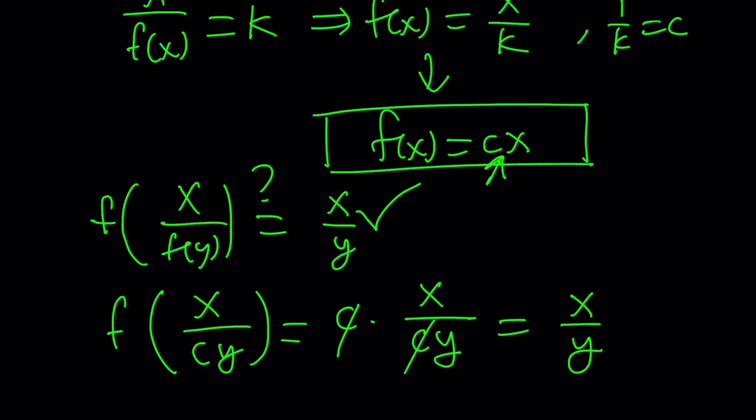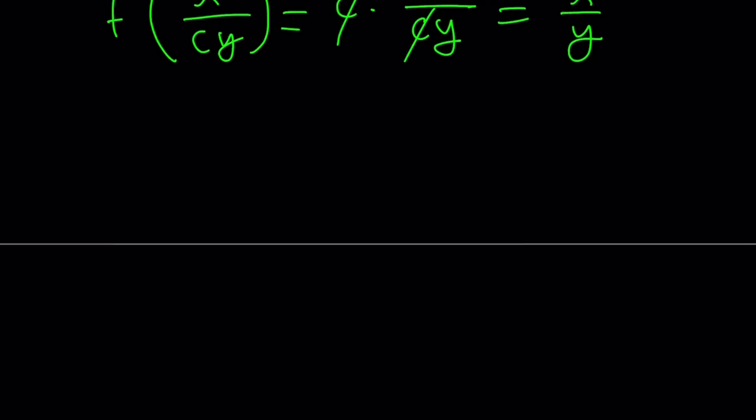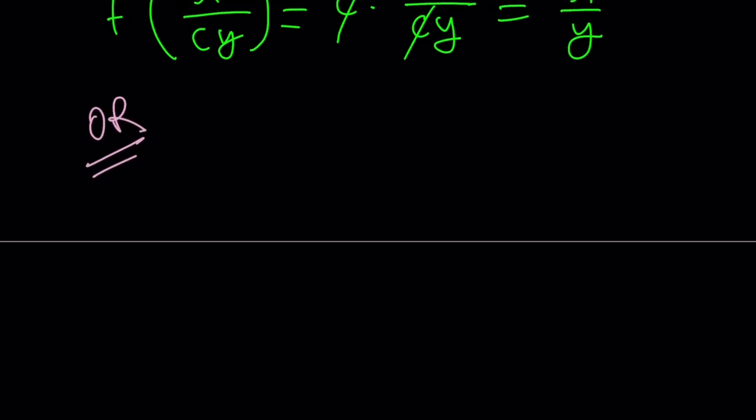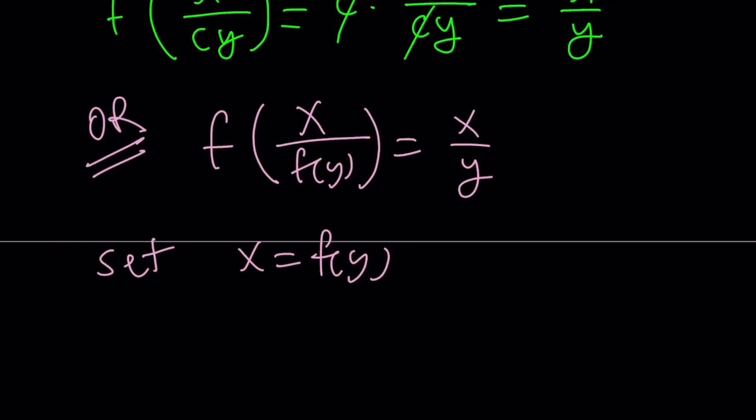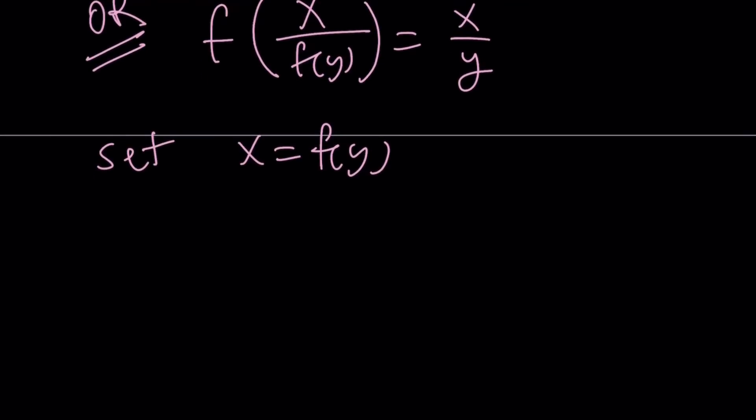So, or you can do the following. Let's take a look at it from another perspective. Because there is more than one perspective here, obviously. So let's go ahead and rewrite our equation. We have f of x over f of y equals x over y. Let's set x equal to f of y. Since x and y are free variables, I can pretty much set x anything I want, right? As long as they're not 0.